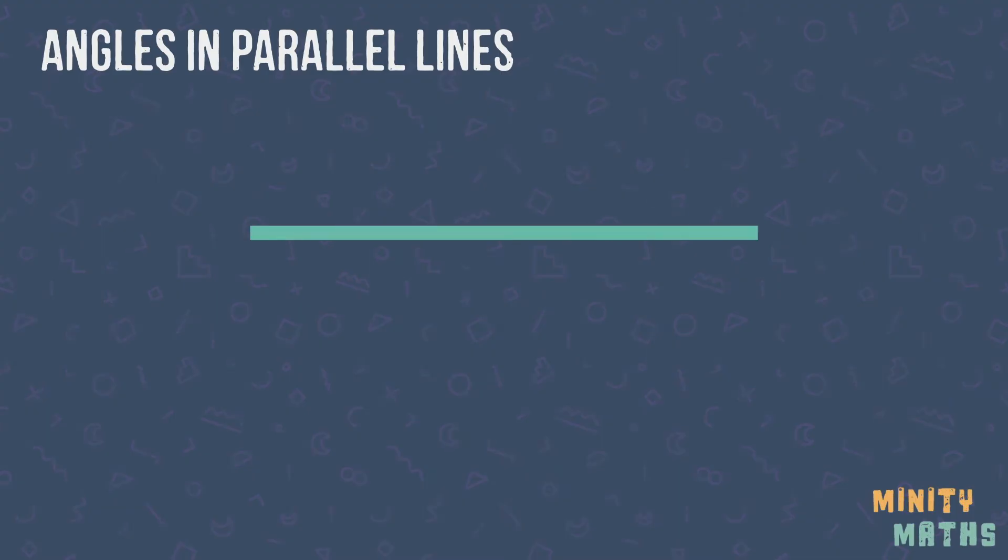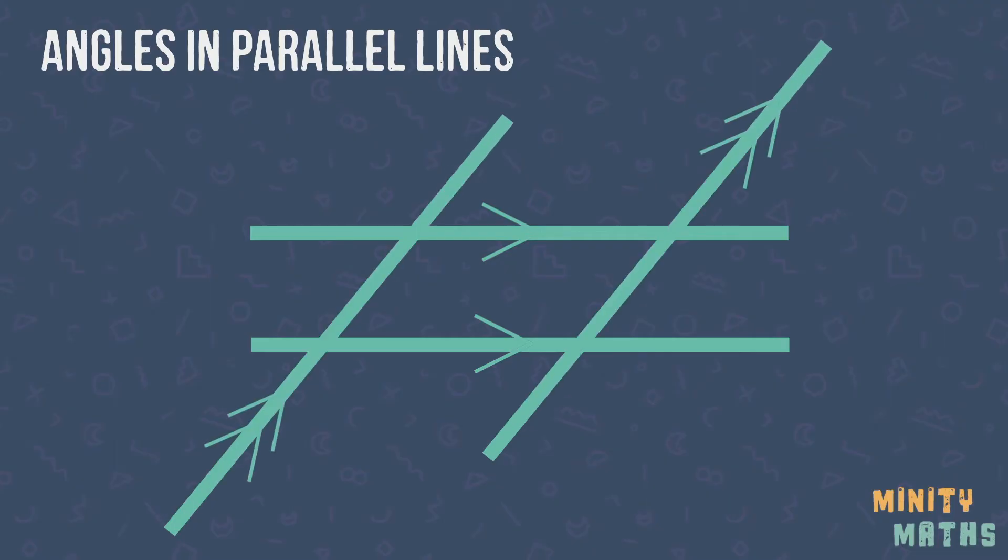Parallel lines are lines which run alongside each other and will never intersect. Parallel lines will usually be indicated by arrows on the lines. If there is more than one pair of parallel lines, these will be indicated with more than one arrow.